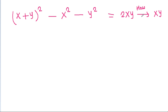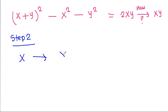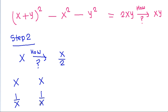Step two is: we have to find x/2 from x. We have x and we can find the reciprocal of x, which is 1/x. Taking 1/x again and adding the two together gives 2/x, and the reciprocal of 2/x is x/2. So by this method we can find x/2 from x.